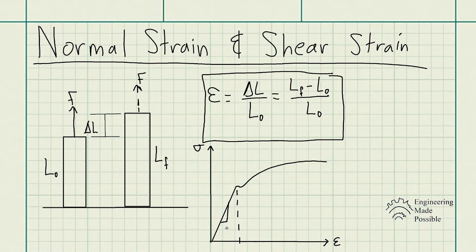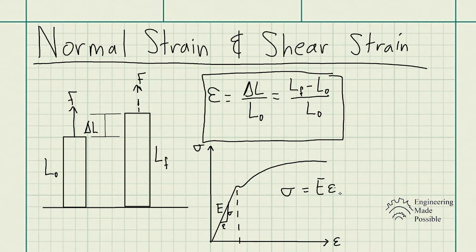The rise is the stress and the run is the strain. This slope is known as Young's modulus or the modulus of elasticity, also known as Hooke's law. So we have stress is equal to Young's modulus E times strain, or stress rise over run is equal to this slope E.